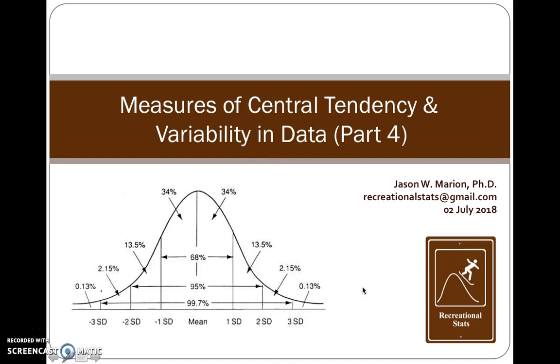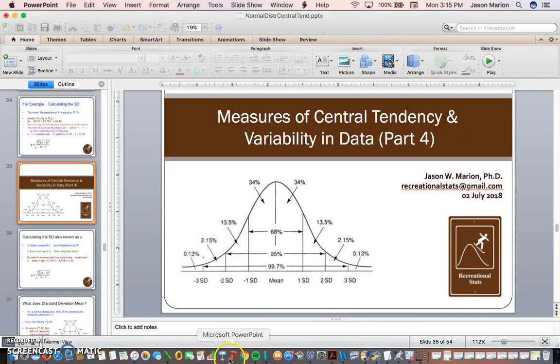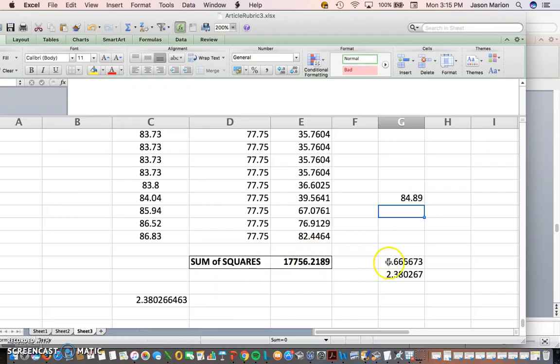Continuing on regarding measures of central tendency and variability, in this video, part 4, we'll have a greater focus on standard deviation. Last time we looked at some Excel data. If you were to do it manually, where you sum the squares and get that number, then divide by n minus 1, which was 3,134, and then do the square root of that final number, you get 2.38. That's the long way.